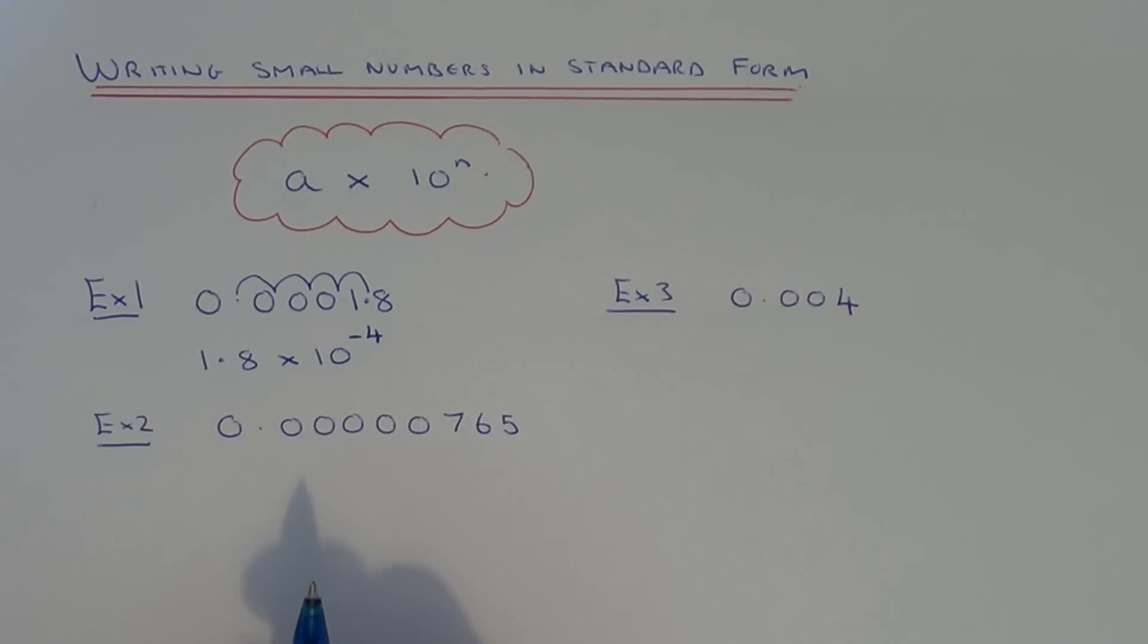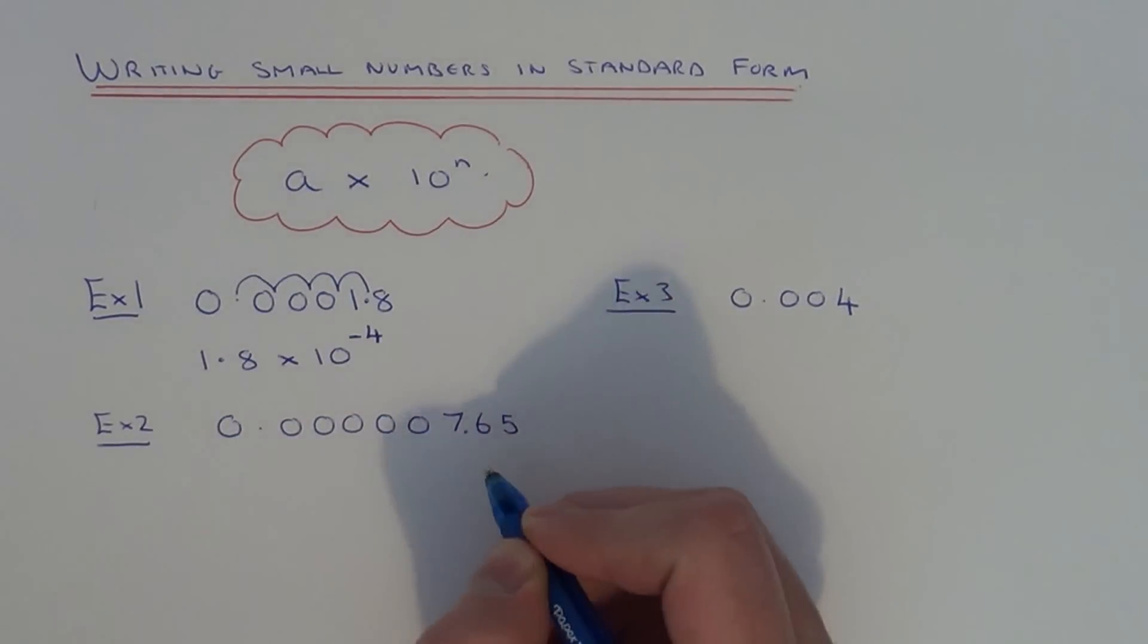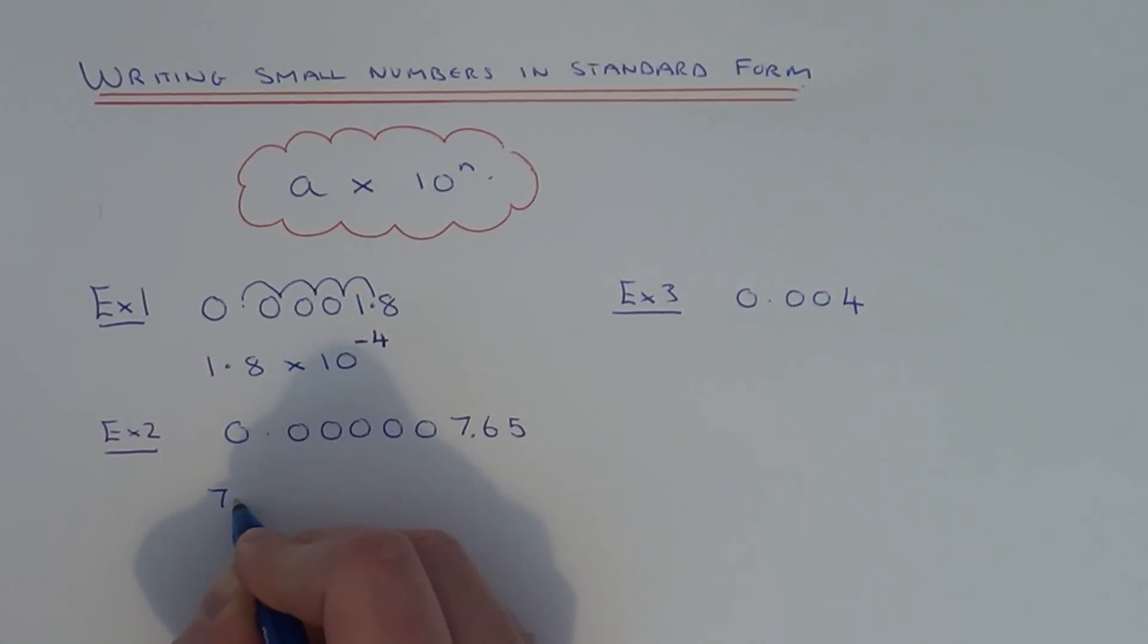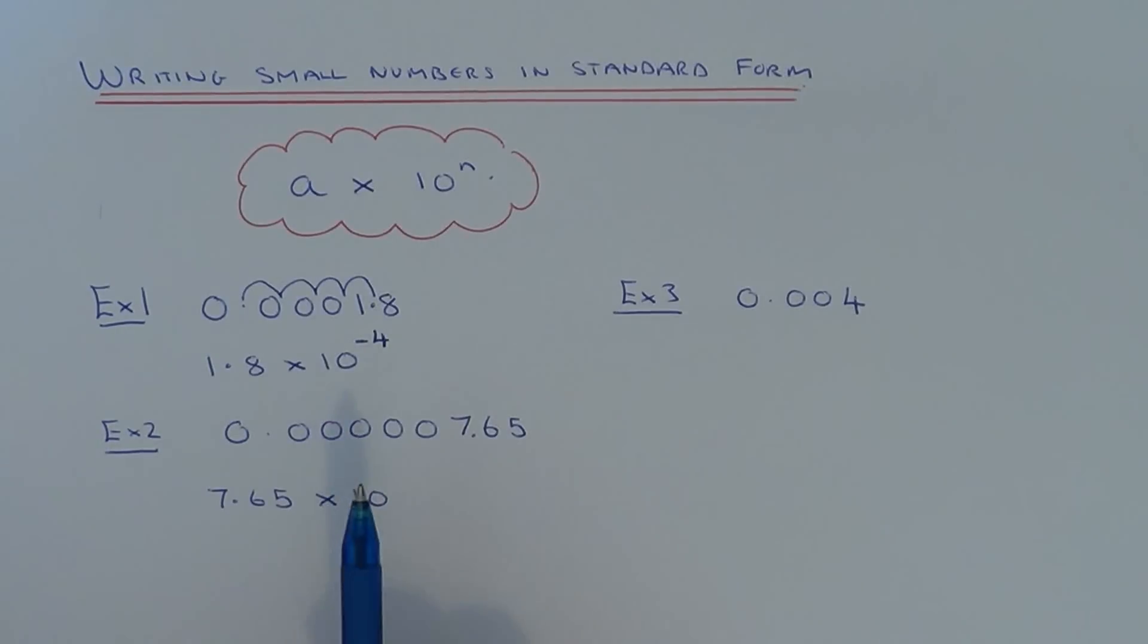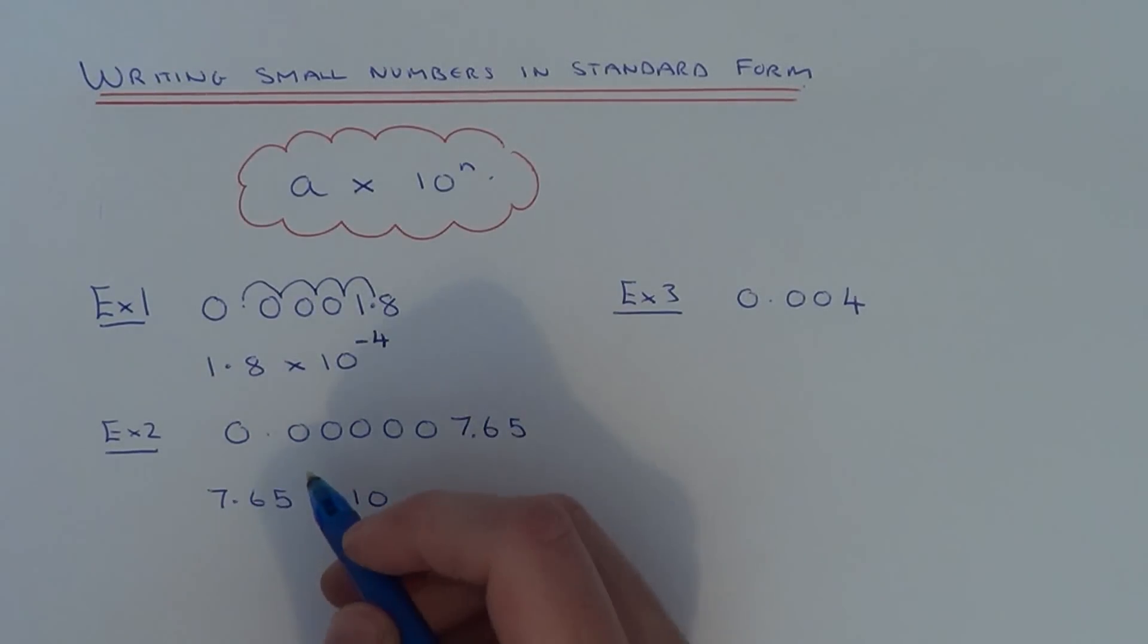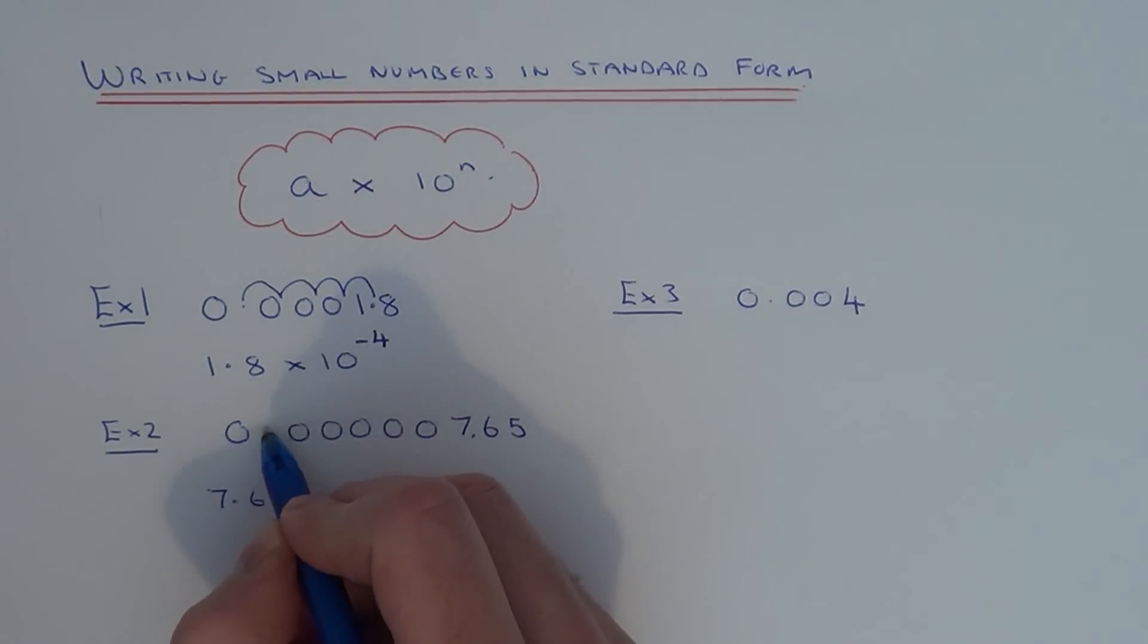So let's move on to example 2. Again, let's make the first number between 1 and 10, so we're going to make it 7.65, and then we have times 10 to the power of something. So again, just figure out how many places we move the decimal points, that's the quickest and easiest way to do it.